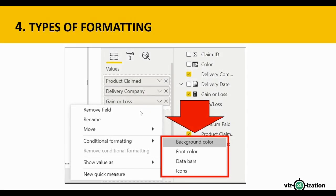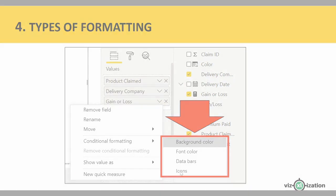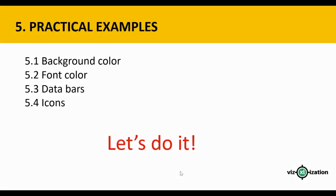For this tutorial we're going to look into four types of formatting: background color, font color, data bars, and icons. We're going to have examples for each of these types of formatting.